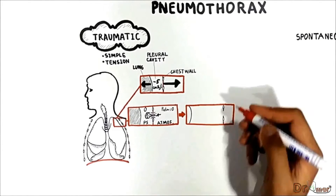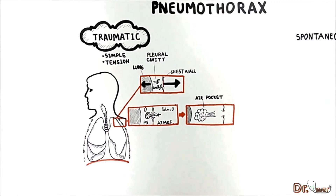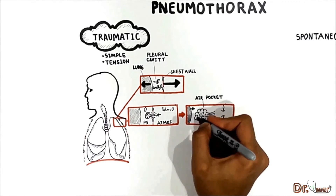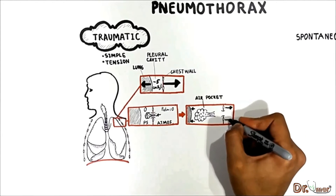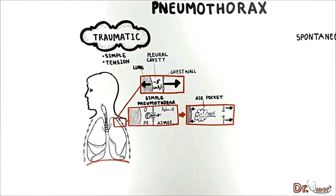As a consequence, an air pocket develops between the chest wall and the lung. The transpulmonary pressure and transthoracic pressure both become zero. There is no pressure holding the lung open and no pressure springing the chest wall inward — the chest wall and the lung are disconnected. Due to recoil force, the lung collapses and the chest wall springs outward. This type of pneumothorax is called simple pneumothorax.